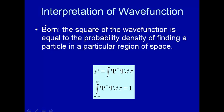But most scientists take the Born interpretation of the wave function. So this is not set in stone. There's some discussion currently about this, but let's just go with the mainstream here. The Born interpretation of the wave function is as follows: the square of the wave function is equal to the probability density of finding a particle in a particular region of space.